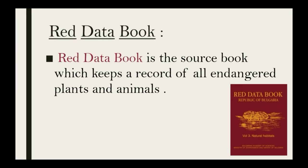Next, the Red Data Book is a record book that keeps a record of all endangered plants and animals — the plants and animals which we can no longer find are kept in this record, which is called the Red Data Book.